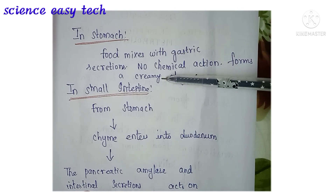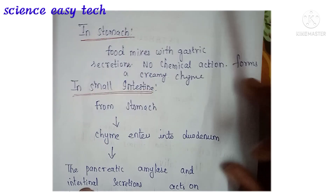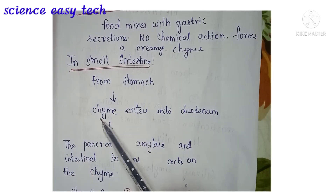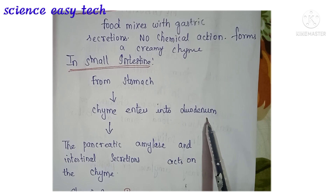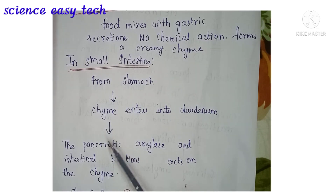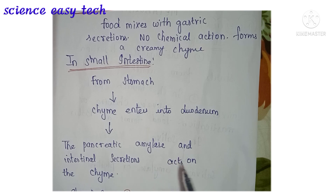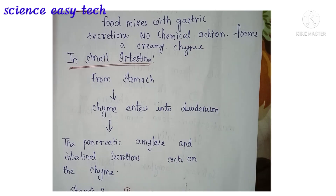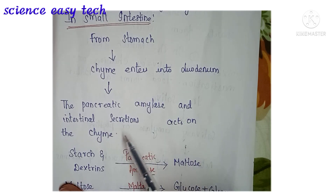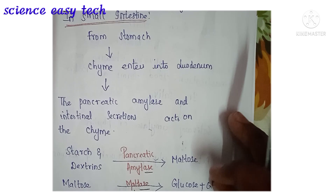Next, this creamy chyme from the stomach moves into the small intestine. From the stomach, the chyme enters the duodenum. Once the food enters the duodenum, the pancreas is stimulated and secretes pancreatic amylase and other intestinal secretions which act on the chyme.